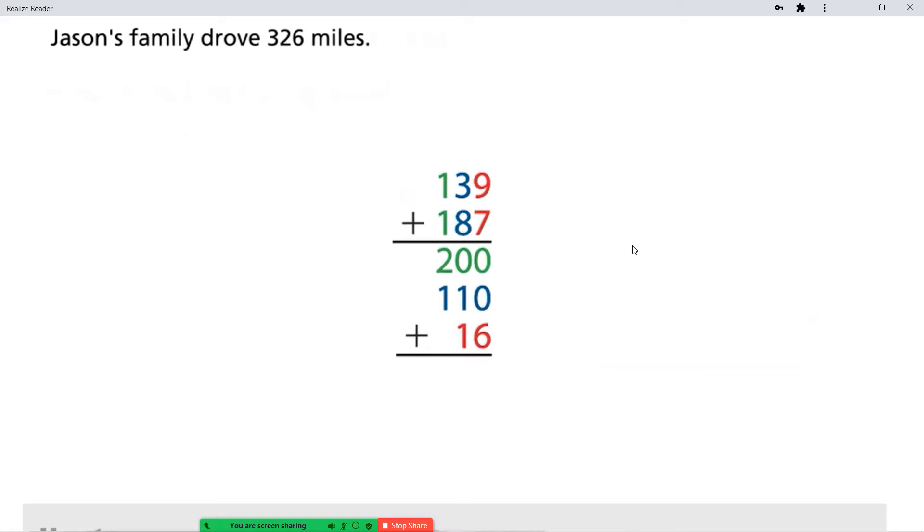Jason's family drove 326 miles. 300 is close to 326. So the sum is reasonable.